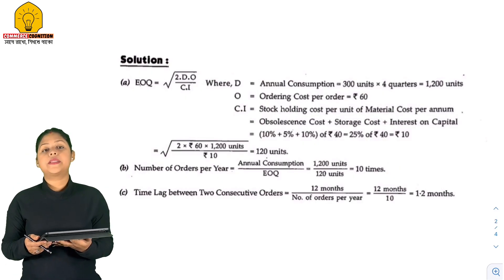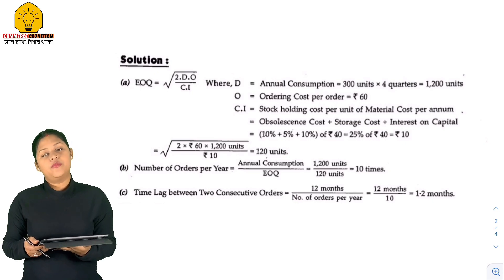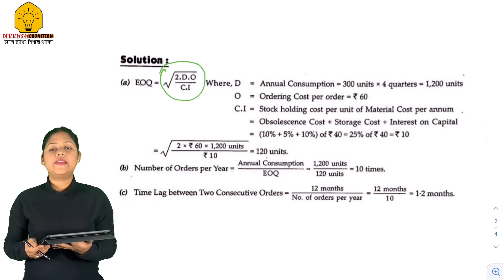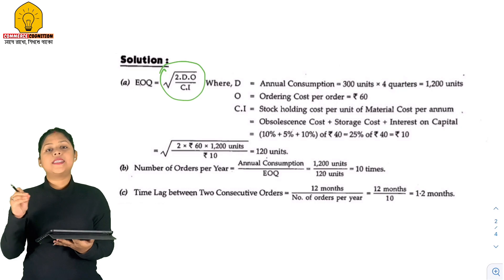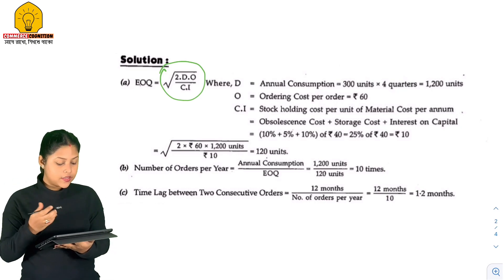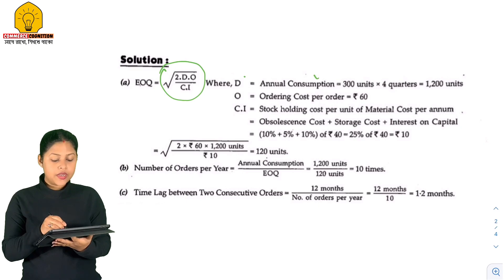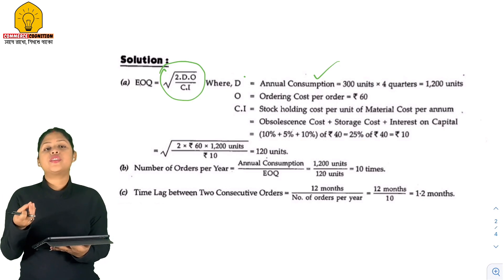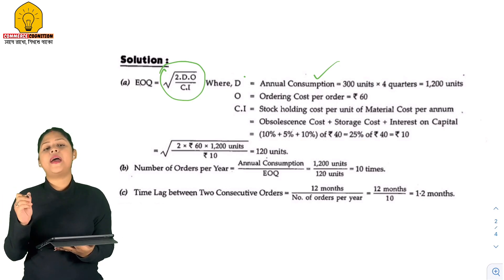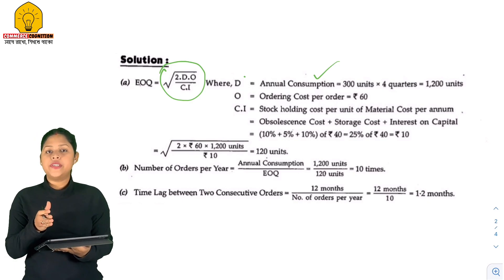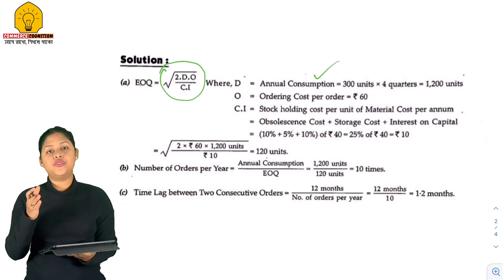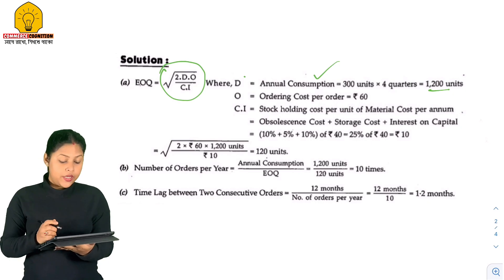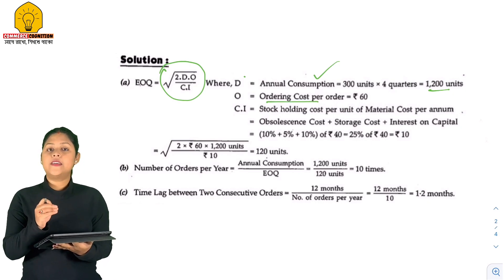What is EOQ? The formula is 2DO divided by CI. D means annual consumption or annual demand. So 300 units per quarter, for the whole year, is 300 into 4 — that is 1,200 units. Next, O means ordering cost per order, which is Rs.60.